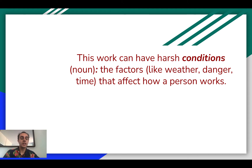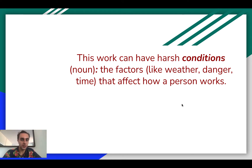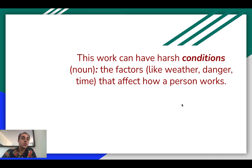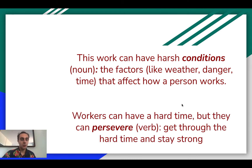Work can have harsh conditions. Condition is a noun — it can be plural or singular. It means the factors like weather, danger, and time — all the different aspects of work that affect how a person works. If it's harsh conditions, that means they're really hard: the weather is really bad, it's really hot, very dangerous, a lot of people in very close quarters. Workers can have a hard time, but they can persevere, which means to get through the hard time and stay strong. Persevere is a verb.